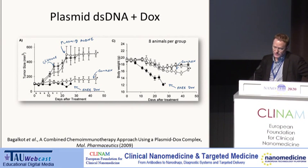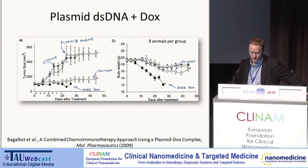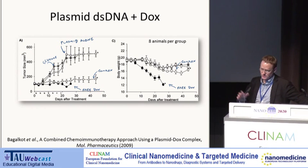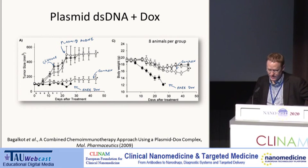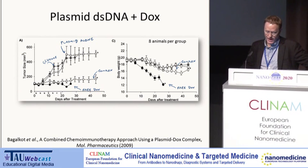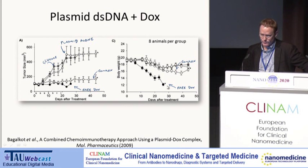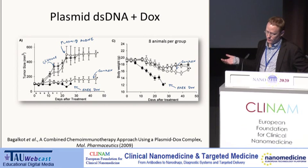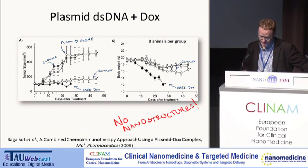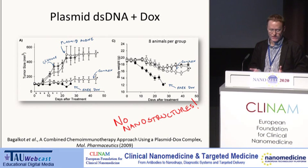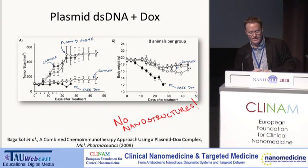Simple double-stranded DNA has also been used for delivery. In 2009, Balgacott and co-workers used plasmid DNA — just DNA produced in bacteria — pre-loaded with doxorubicin to test delivery in a xenograft model. In the case of free doxorubicin, side effects were more severe, as seen from the body weight curve. This was a study in mice using only double-stranded DNA with no nanostructures. When I saw this, I thought: couldn't we do even better using nanostructured DNA?